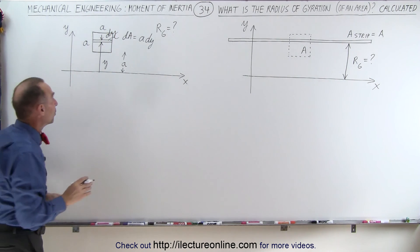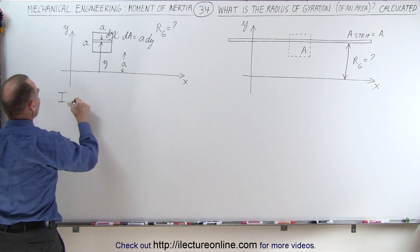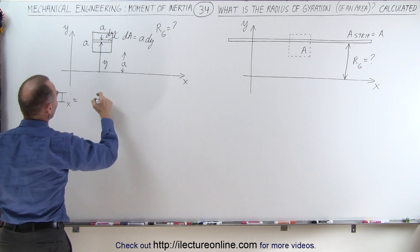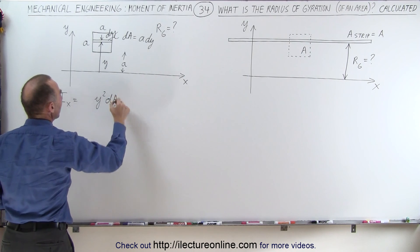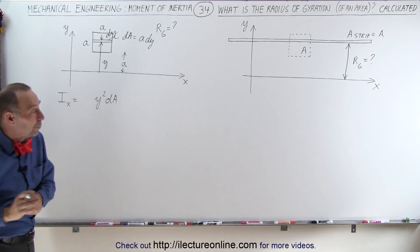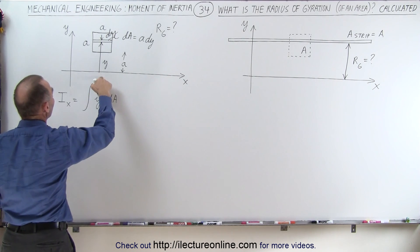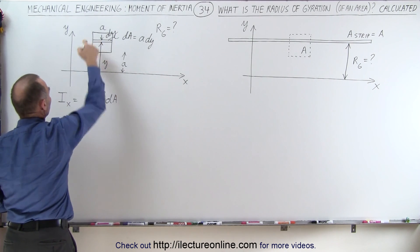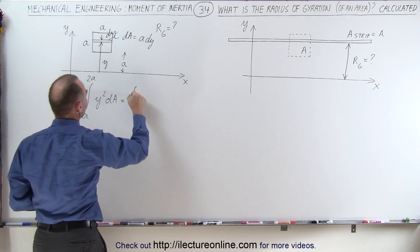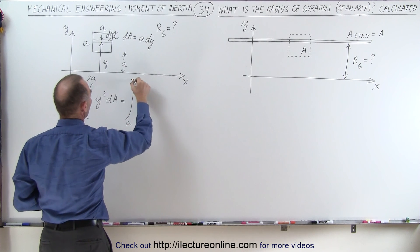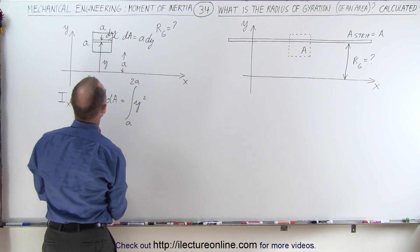The definition of the moment of inertia is that the moment of inertia of that strip relative to the x-axis equals the distance squared, y², times the area dA. To find the moment of inertia of the entire square, we integrate from y = A to y = 2A. So this equals the integral from A to 2A of y² times A·dy.